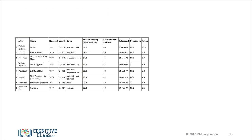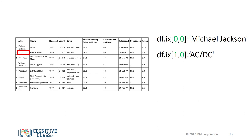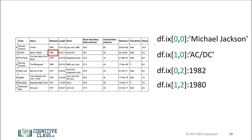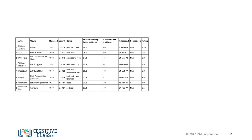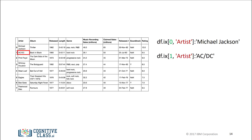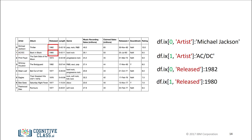One way to access unique elements is the ix method. You can access the first row and first column, the second row and first column, the first row and third column, or the second row and third column. When you use the name of the column as well, you can access the first row of the column named artist, the second row of the column named artist, the first row of the column named released, and the second row of the column named released.